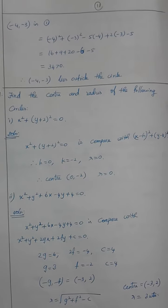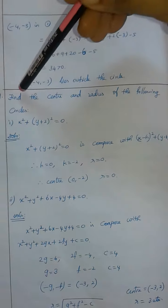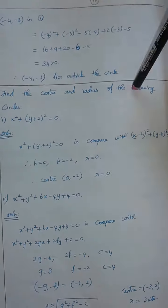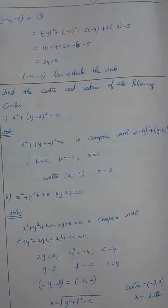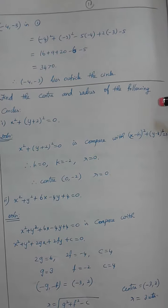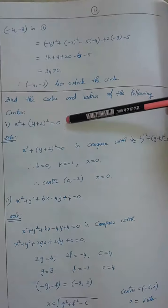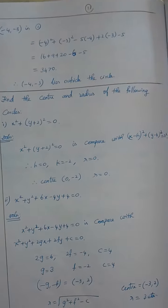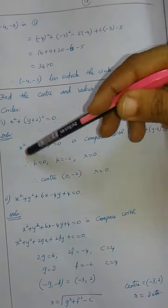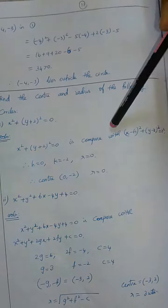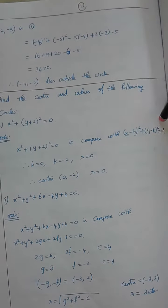X is 5.1, question number 11. Find the center and radius of the following circle. This is a circle equation, and this circle equation is in general form.